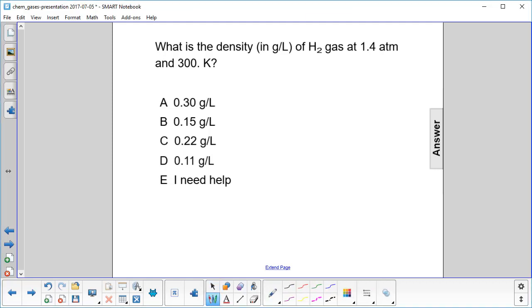What is the density in grams per liter of hydrogen gas at 1.4 atmosphere and 300 Kelvin? We have a nice little formula for the density. Density is equal to the molar mass, capital M, times the pressure, divided by the constant and temperature.